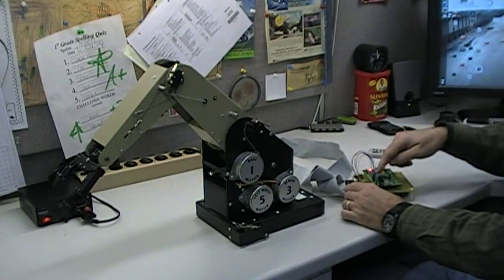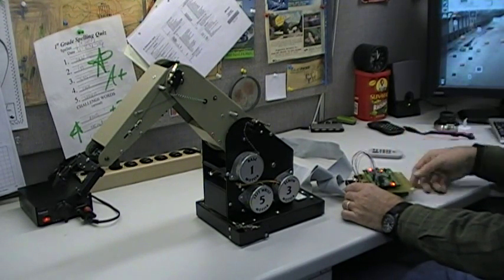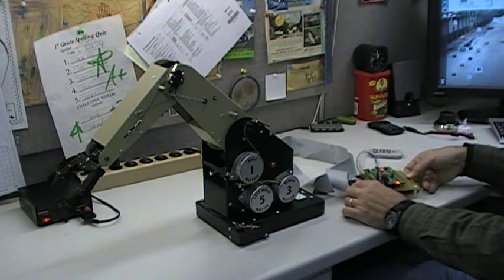You can push a button on the board here and switch modes. Then it'll let you do other things, open and close the claw.